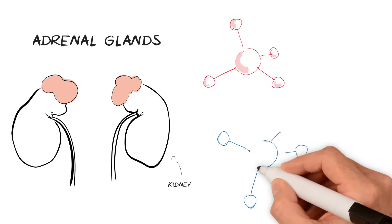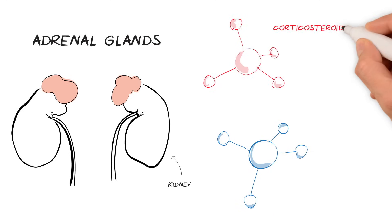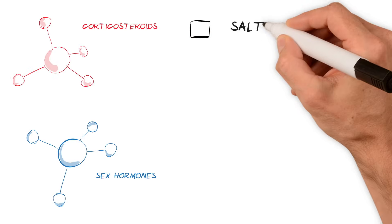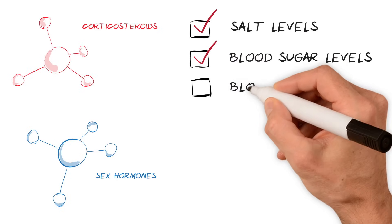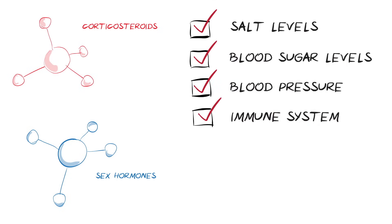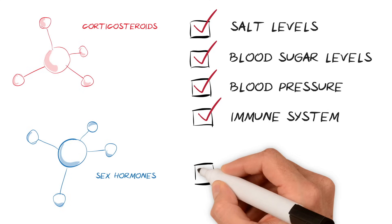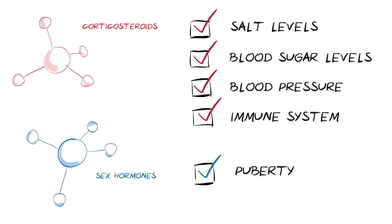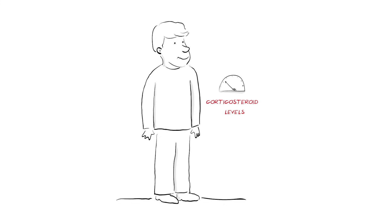The outer part of the adrenal gland produces two different types of hormones: corticosteroid hormones and sex hormones. The corticosteroids have a role in salt levels, blood sugar levels, blood pressure, and the immune system. The sex hormones are responsible for the changes that take place in boys and girls during puberty. So both these types of hormones are important, and having the right levels in the body is also important.